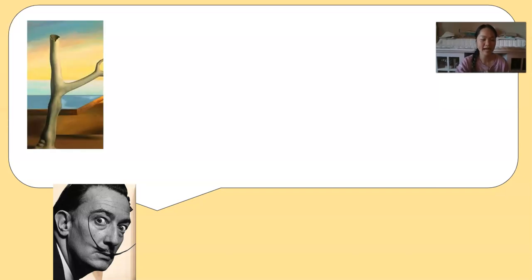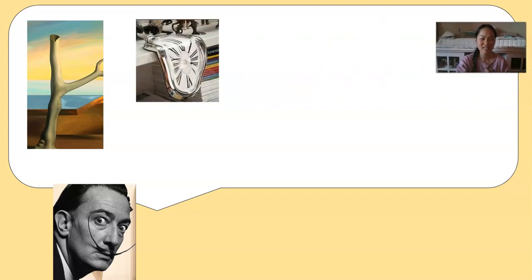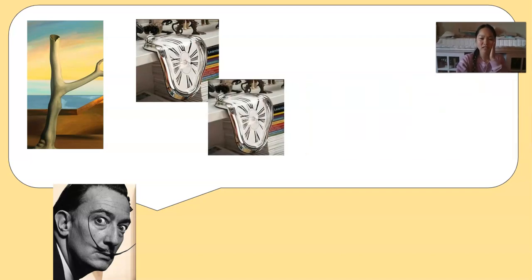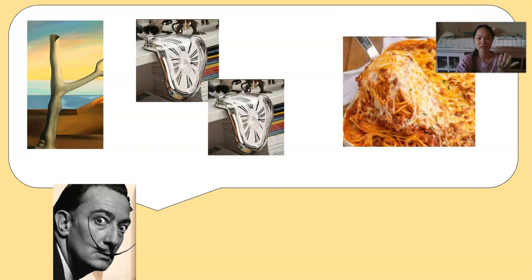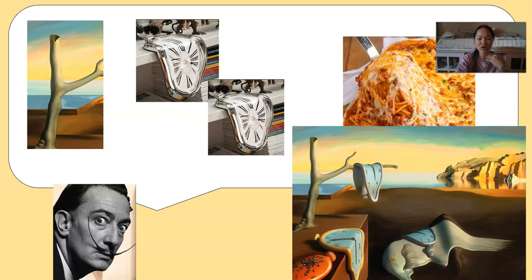Dalí had great ideas come to him in his painting. He had a branch from an olive tree that he thought to just paint natural, realistic things on. But then he started to think about how the objects in his painting could be not just realistic but more fantasy — maybe the clocks in his image could melt like the cheese he had at dinner.